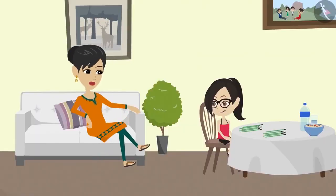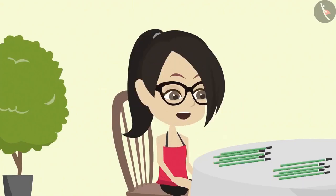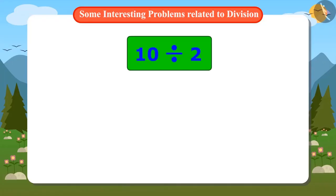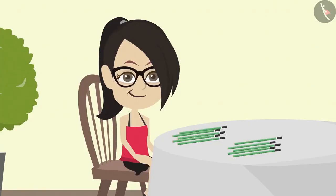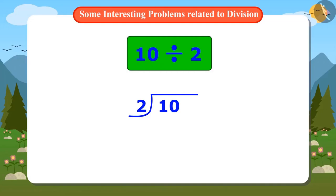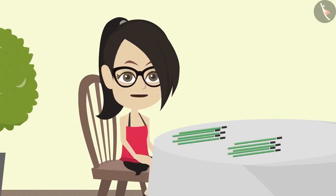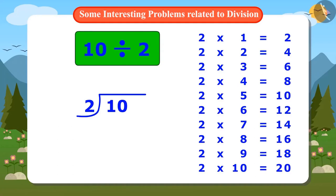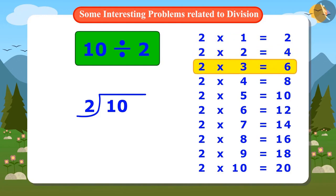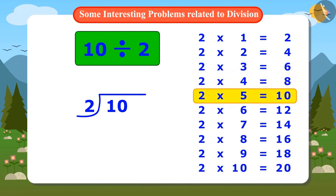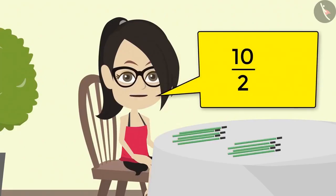Do you know how to divide it? Vandana is dividing ten by two. To divide by two, I should make use of the tables. Now I understand why my mother was saying that I can use multiplication tables. I will read the multiplication table until it becomes ten. Two ones are two. Two twos are four. Two threes are six. Two fours are eight. Two fives are ten. That is, two times five is ten. The answer is five when ten is divided by two.